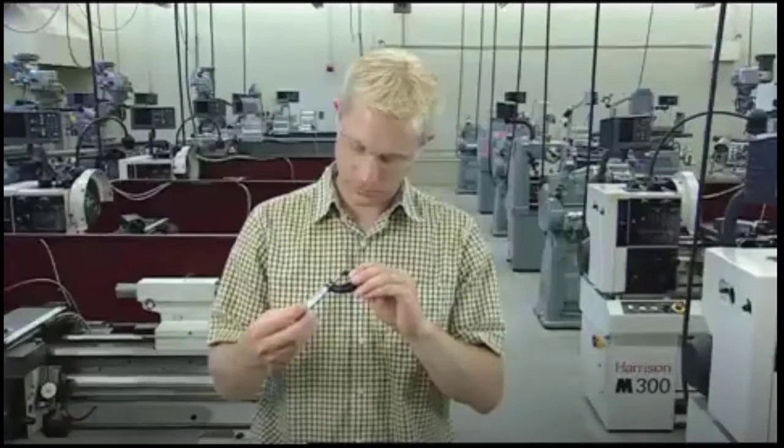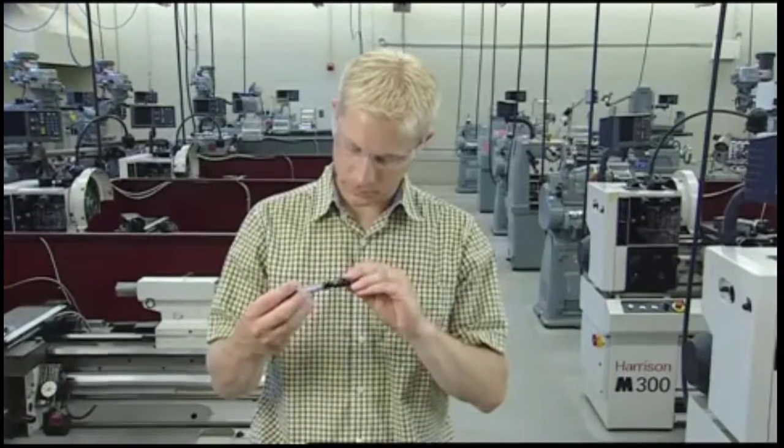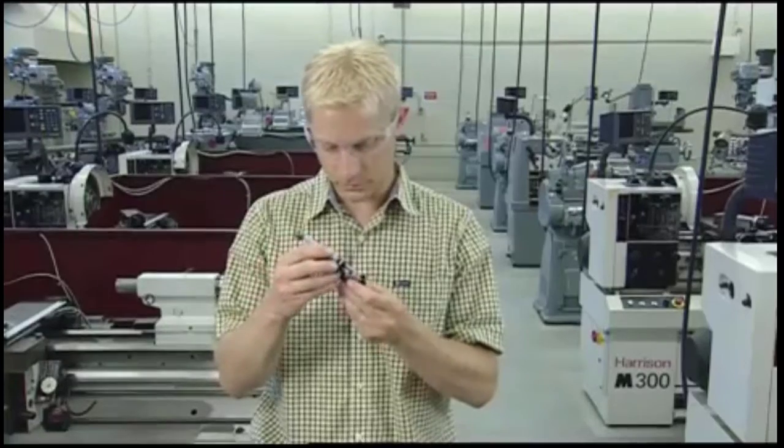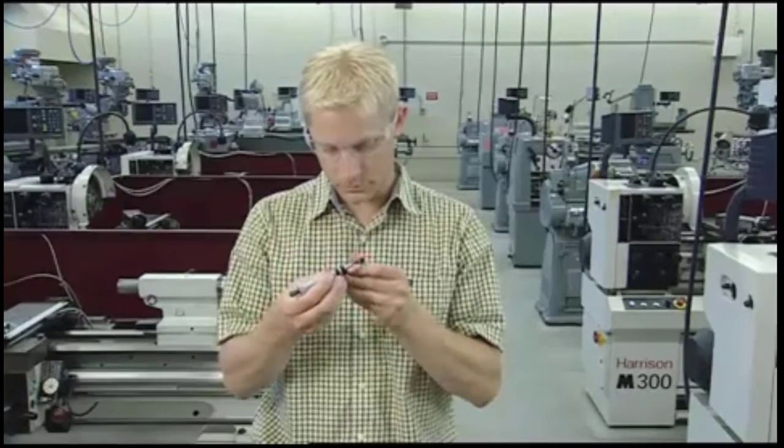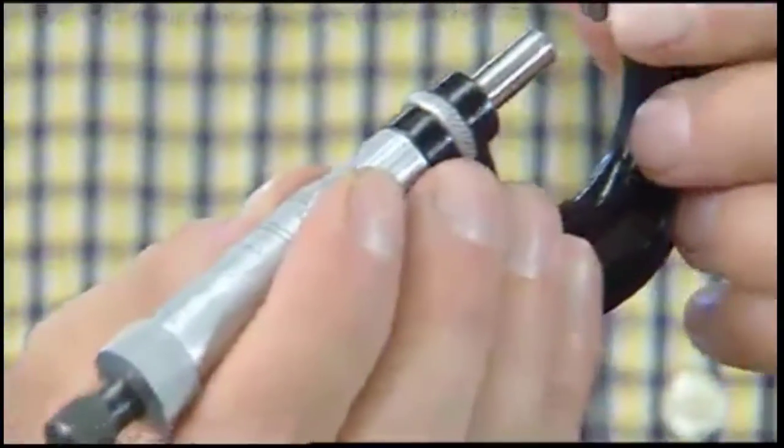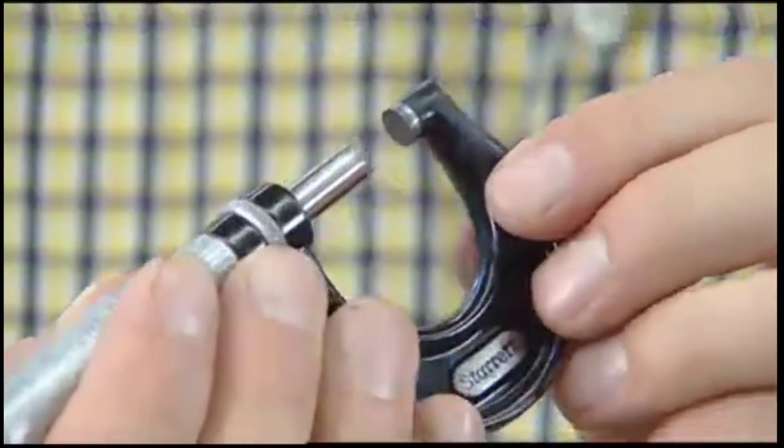To calibrate a micrometer, begin by visually inspecting both the spindle and anvil faces for chips, cracks, and wear. If you find any severe damage, properly dispose of the micrometer.